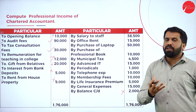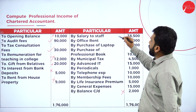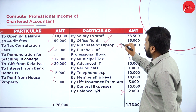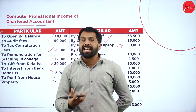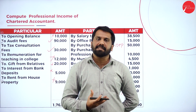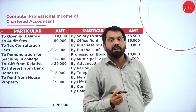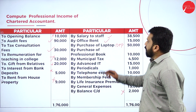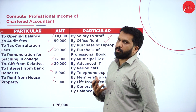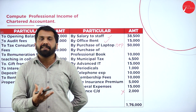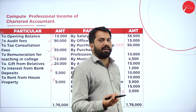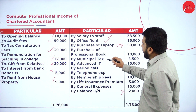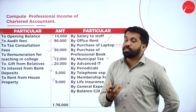Professional expenditures: salary to staff — yes, it is professional. Office rent — yes. Purchase of laptop — we only go for depreciation because laptop is a capital asset. For any capital asset we don't go for the full value, we go for depreciation. Purchase of professional books — it is an expense; normally professional books come at 100% depreciation, so if it is 10,000, it will come as 10,000 depreciation.